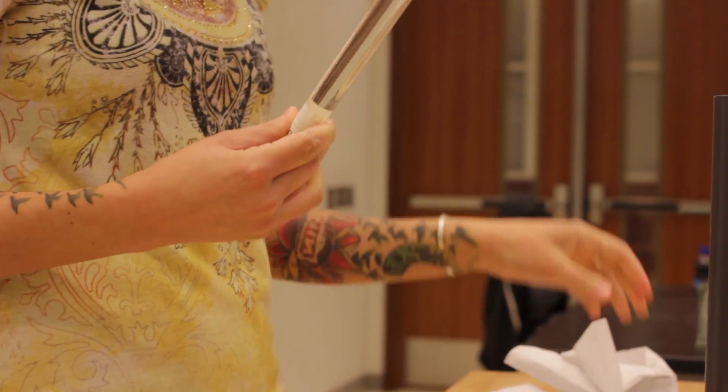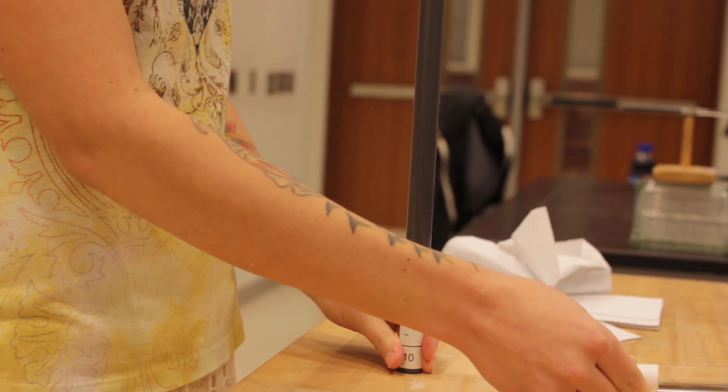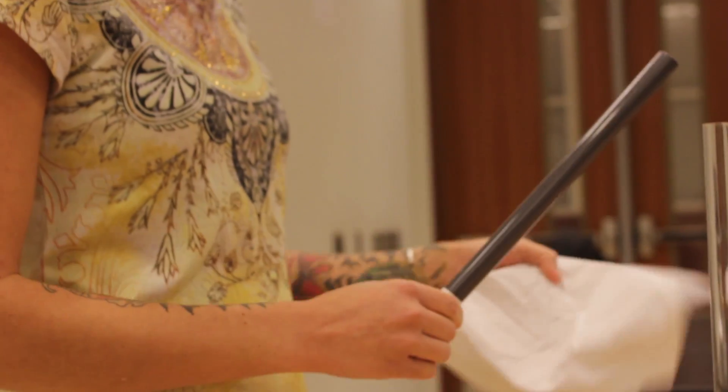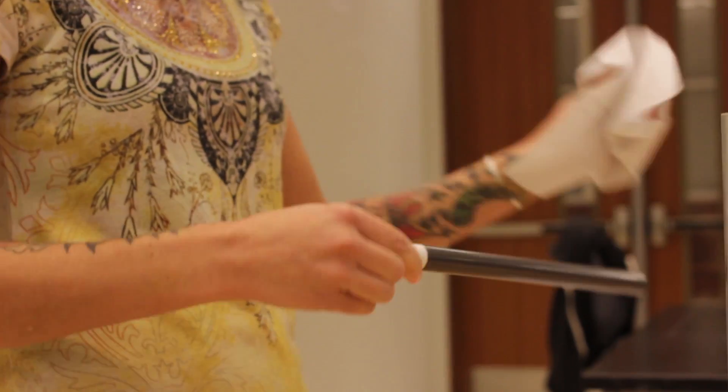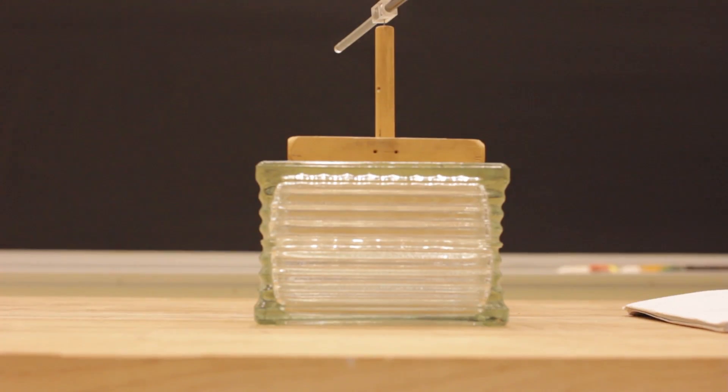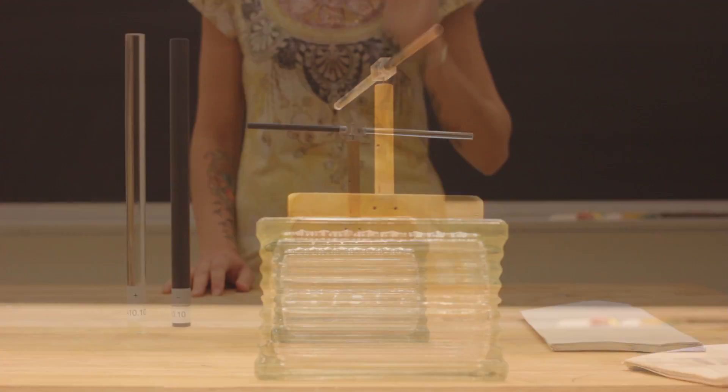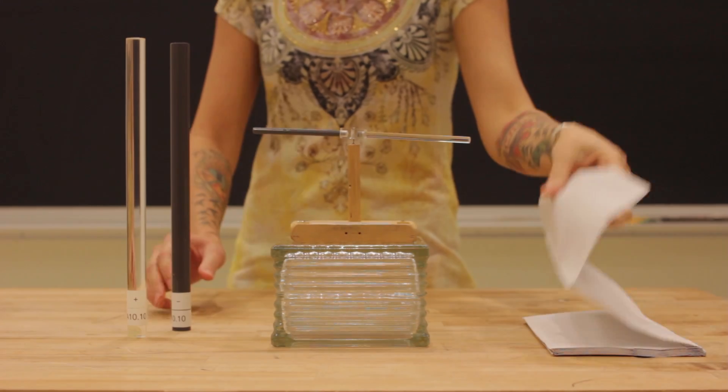We will use a clear rod of acrylic and a dark rod of PVC. I can charge these rods simply by rubbing them with paper towels. A third smaller rod is half acrylic and half PVC and can spin about its mounted center.